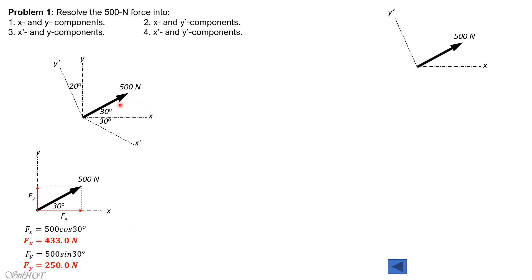Next, for part two, we find the x and y prime components. We consider the x and y prime axes, and from the tip of the force we draw lines parallel to the x and y prime axes to form the parallelogram, giving Fy prime and Fx. The angle here is 80 degrees because it is 60 plus 20. Since this is a parallelogram, transversal angles are equal, making this angle also 80 degrees, and this other angle 30 degrees.